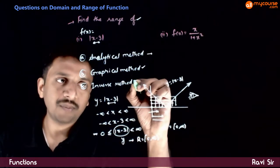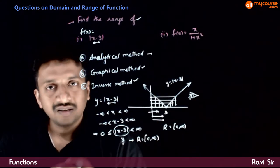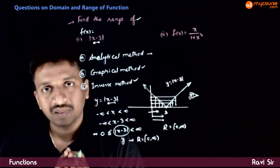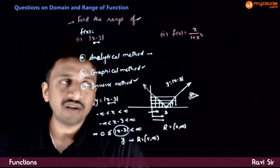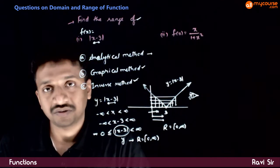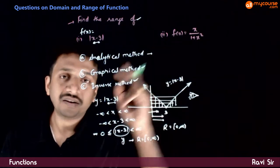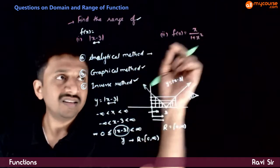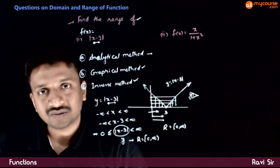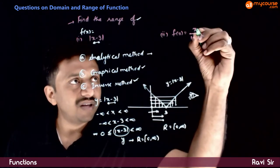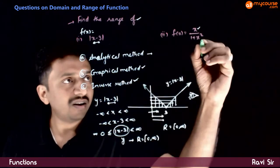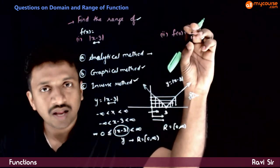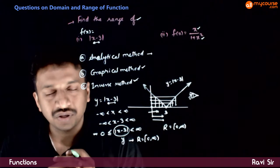The inverse method will be useful if it is easy to find the inverse of the function. Now let us go to f(x) = x / (1 + x²). By the analytical method, it is difficult to find the range of x / (1 + x²) because there is a variation of x in both the numerator and the denominator — as x changes, where this value lies is a difficult question to answer.